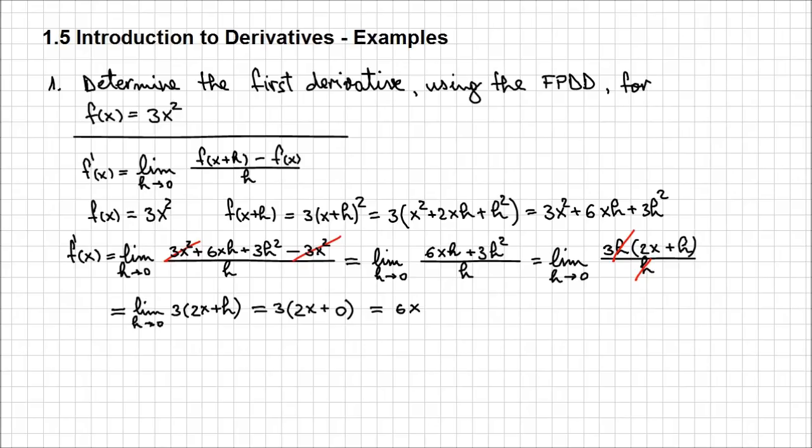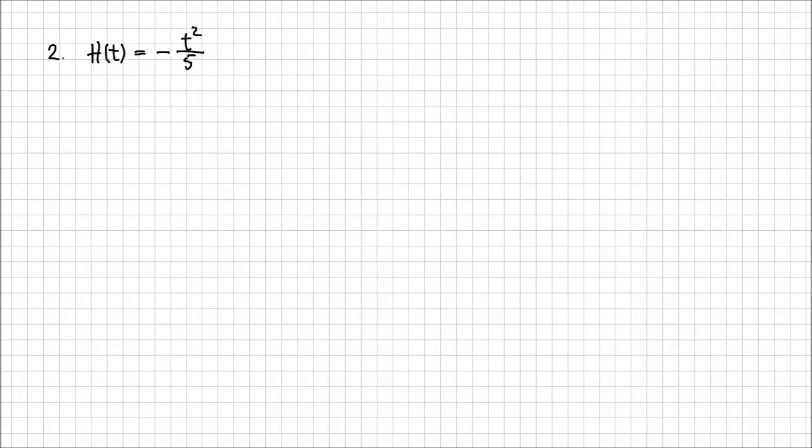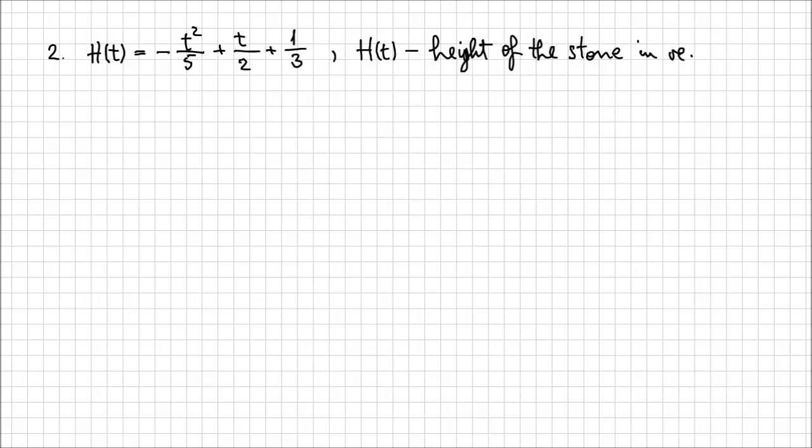Imagine that after so much mathematics, you feel like going to the lakeshore. Once there, you notice some kids skipping stones. Since the mathematics is still in the back of your mind, you wonder: what would be the rate of change of the height of those stones thrown in the water? So let's approach this second example with the function h of t equals minus t squared over 5, plus t over 2, plus 1 over 3, where h of t represents the height of the stone in meters and t is the time in seconds.